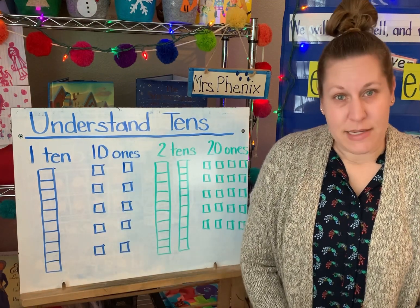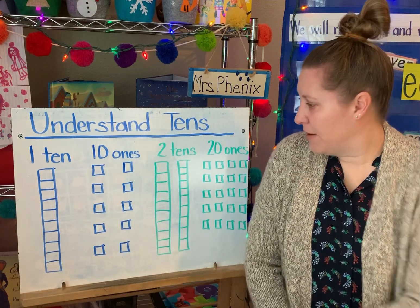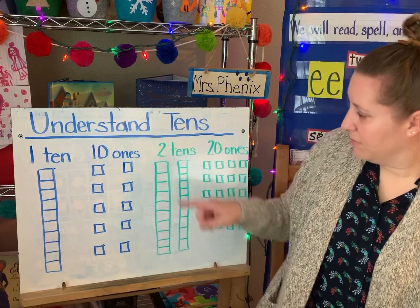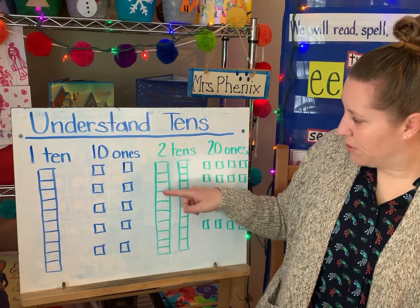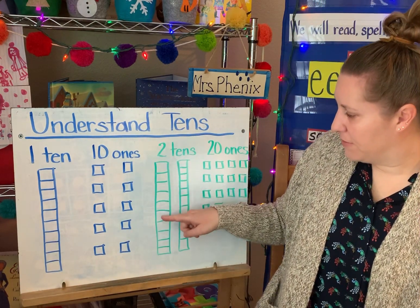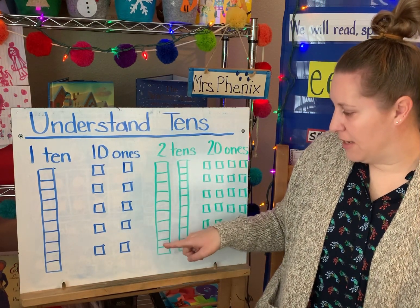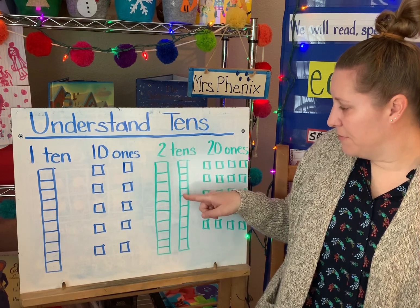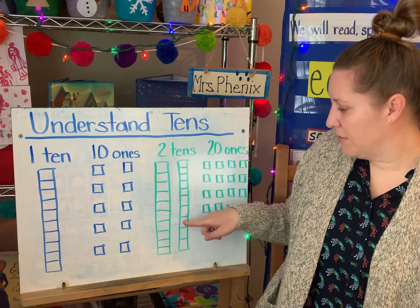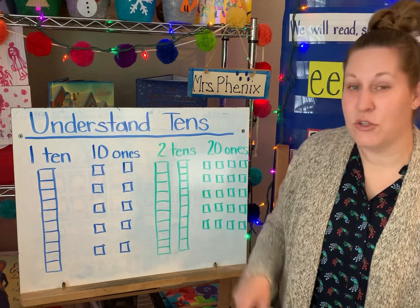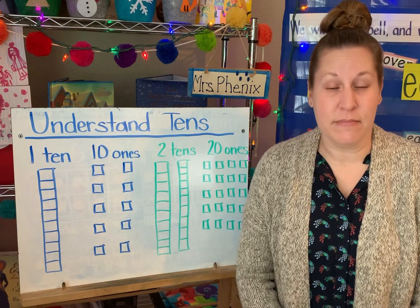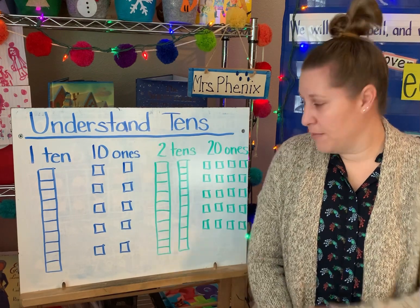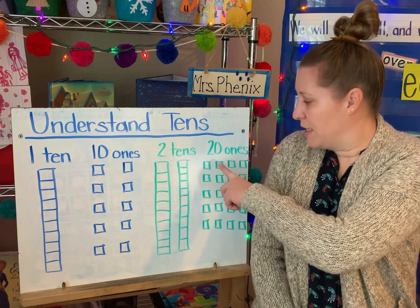Let's take a look at 20. This time we have two 10s: 1, 2, 3, 4, 5, 6, 7, 8, 9, 10, 11, 12, 13, 14, 15, 16, 17, 18, 19, 20. And that is the same as 20 ones.